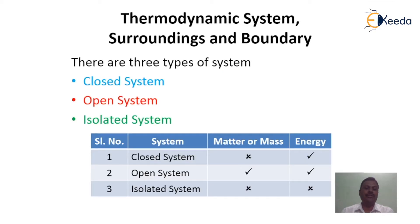There are three classes of systems: closed system, open system, and isolated system. In case of closed system, there will not be movement of mass or matter across the system boundary, but there will be energy transfer across the system boundary. In case of open system, there will be both mass and energy crossing the boundary of the system. In case of isolated system, neither energy nor matter crosses the boundary of the system.